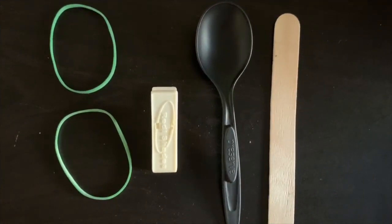So today you're going to need two rubber bands, one clothespin, one plastic spoon, and one popsicle stick.